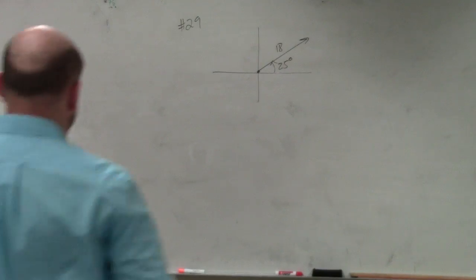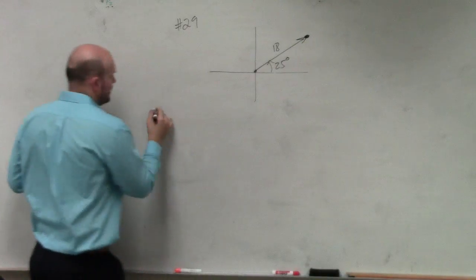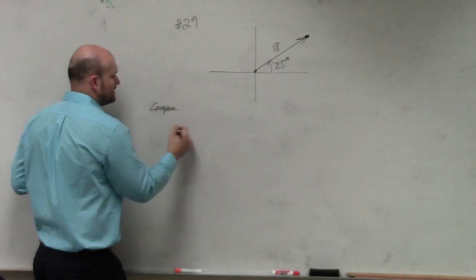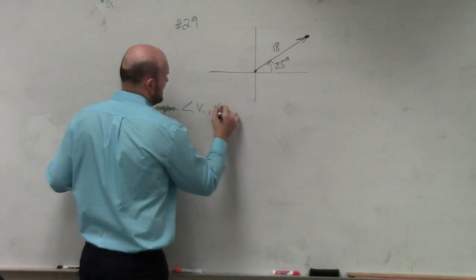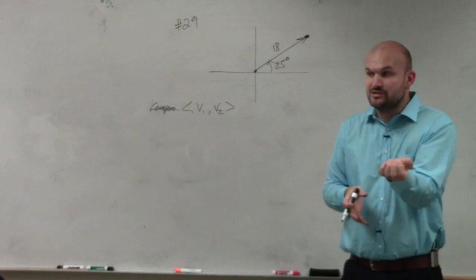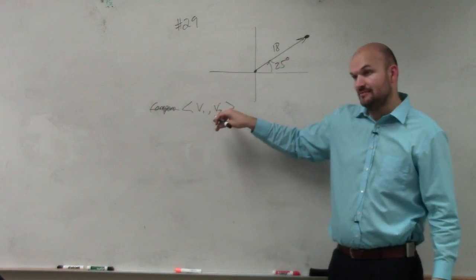We've got to remember our three ways to write a vector. The first one was component form. Actually, I'm not going to write these up. V1 comma V2. We know component form - the initial point is at (0,0) and the ending point is at (V1, V2), right? So that's component form.